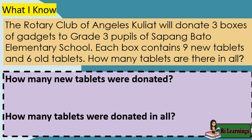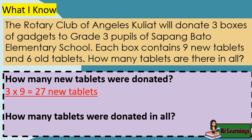How many new tablets were donated? Three times nine equals 27 new tablets. How many tablets were donated in all? Three times parenthesis nine plus six close parenthesis equals 45 tablets.